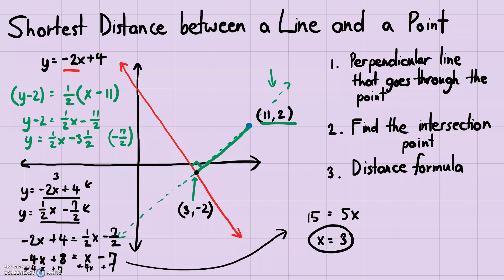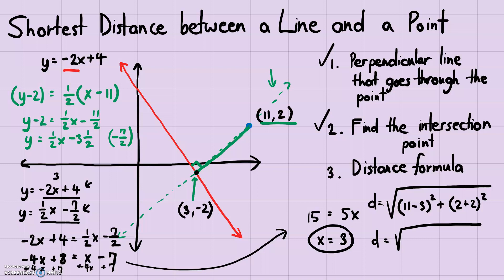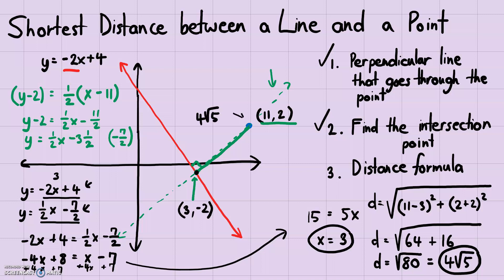We've completed steps one and two. Now use the distance formula between (11, 2) and (3, -2). Distance = √[(11-3)² + (2-(-2))²] = √[8² + 4²] = √[64 + 16] = √80 = 4√5. So the shortest distance between the point and the line is 4√5.